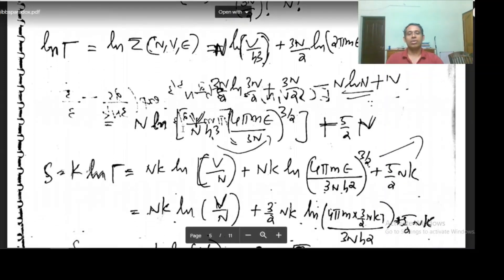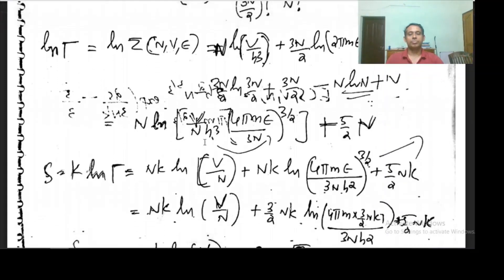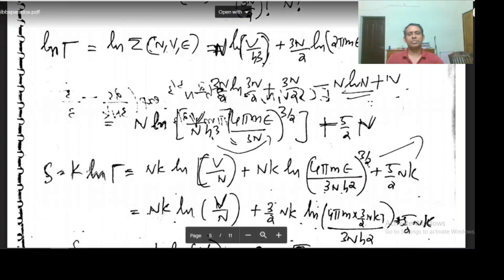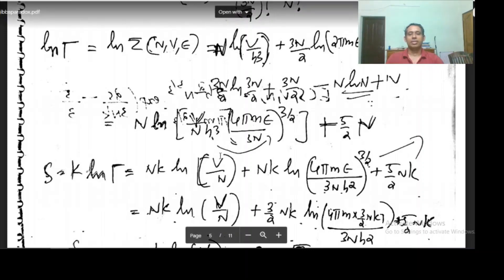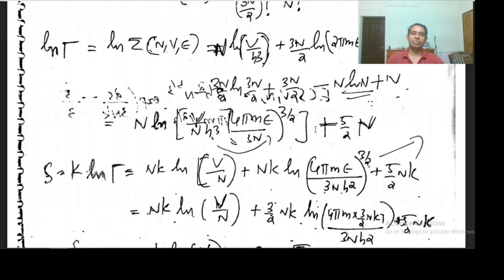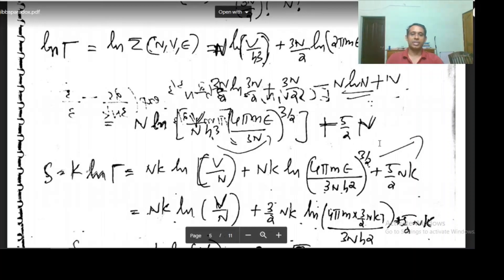So this gives n log(v/nh³), combining log(v/h³) and minus log(n). So we have v/(nh³) and combining with 2log(2πme), we get 4πme/(3n) to the power 3/2, giving a factor of 5/2 n, since 3n/2 combines with n forming 5/2 n.